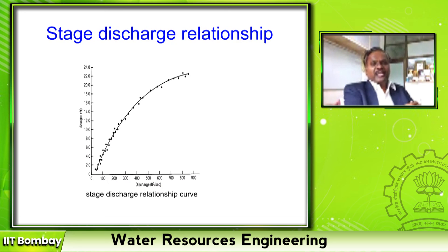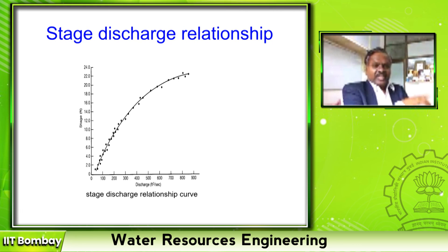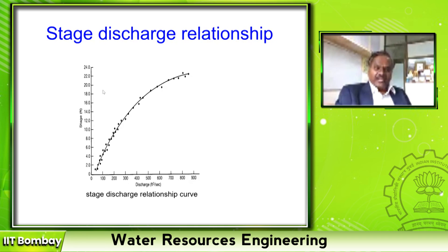We put the data in the form of a pictorial representation called the stage-discharge relationship — stage (representative depth of flow) versus discharge. For example, on train bridges you see markings like staff gauge readings — those represent the depth of flow. Once you pre-establish a relationship between stage and discharge, when the water is at 12 meters stage you don't need to go and measure — you can directly find the discharge from the graph, even for levels between your measured programs. The dots in the graph are measured discharges at constant water levels, and from the developed curve you can estimate discharge at any depth.